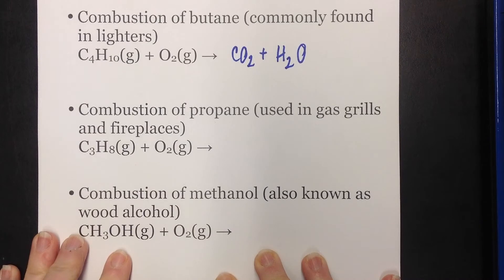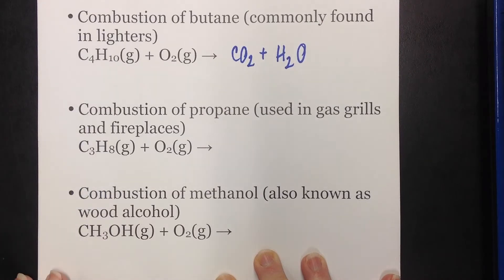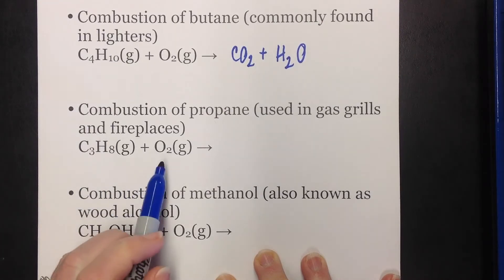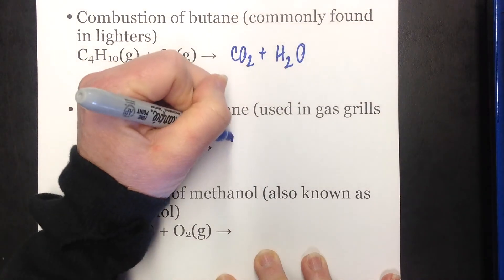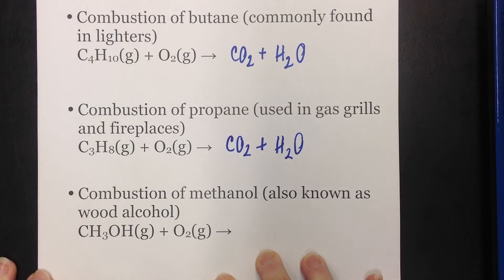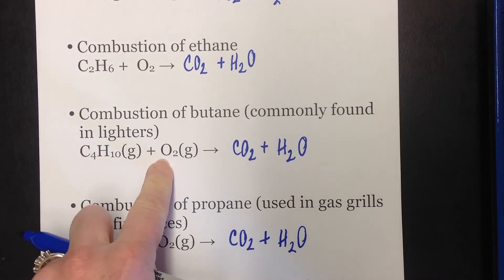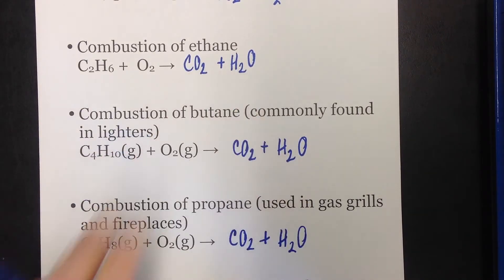The next one is the combustion of propane. And most of you have probably heard of propane that's used in gas grills, maybe in gas logs in your home, or if you are a camper, maybe you've used that in a camp stove. So propane is C3H8. If we add oxygen gas to that, we are going to get CO2 and H2O. So you can see that any time we add a hydrocarbon to oxygen gas in a combustion reaction, we will get CO2 and H2O.